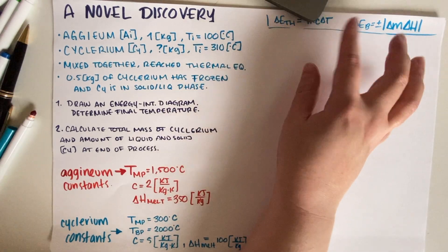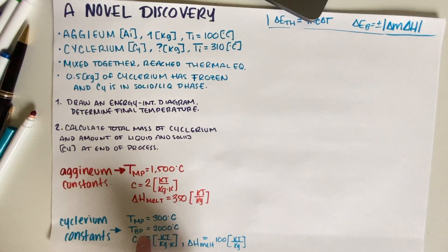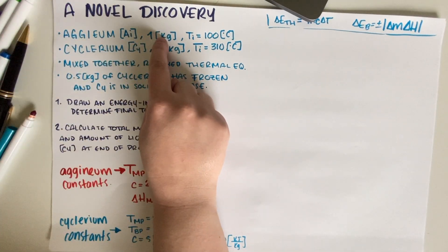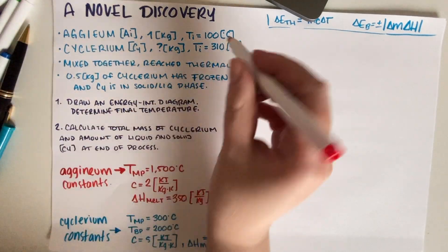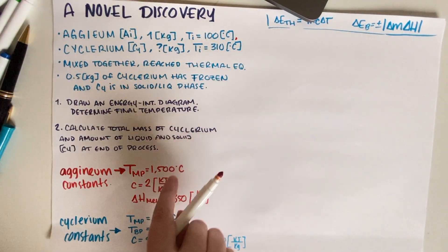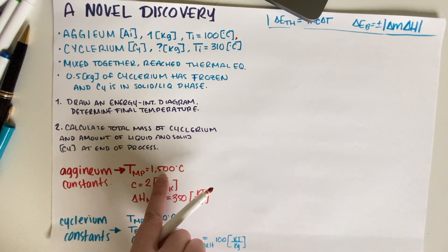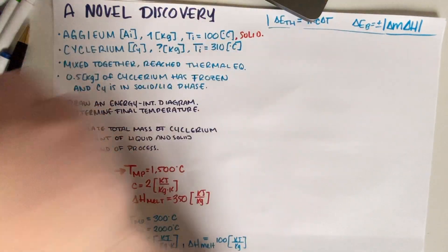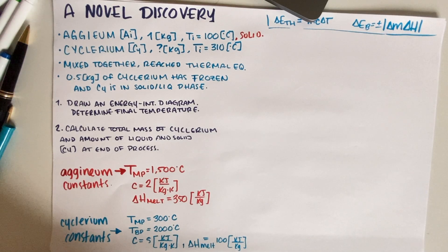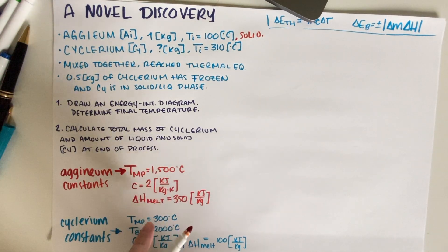I have the constants for aginium and cyclerium written down. Aginium is one kilogram and starts at 100°C. Since its melting point is 1500°C, that means aginium is all solid at the start, and it's going to stay a solid throughout the process.